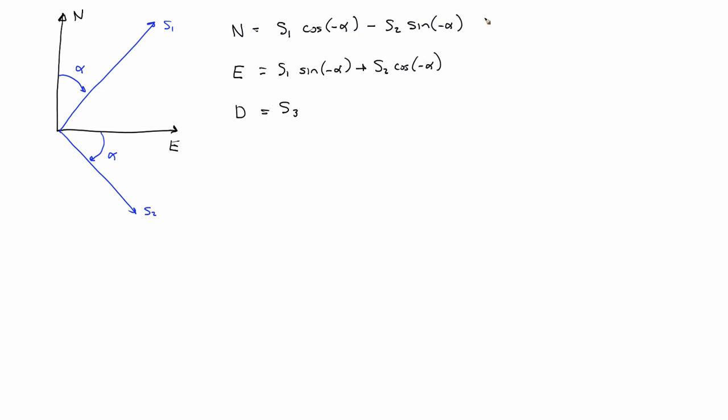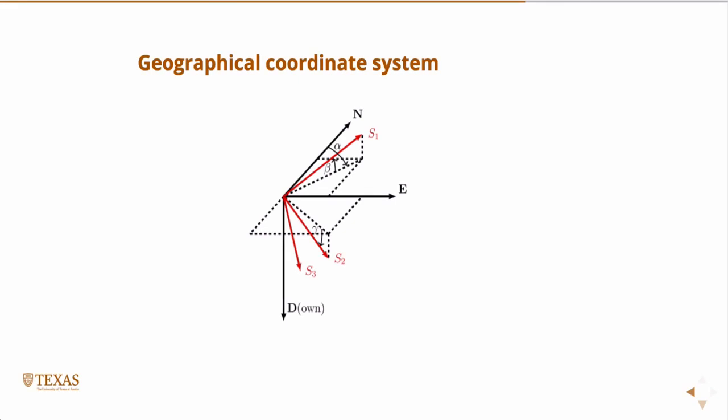Now I can write this in matrix form. North, east, down, is equal to cosine minus alpha, sine minus alpha, times S1, S2, S3. So this is a matrix I'm going to call R1. So that's one rotation.